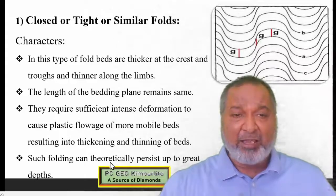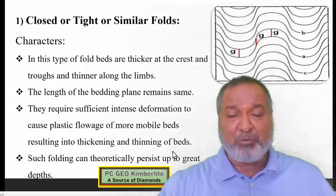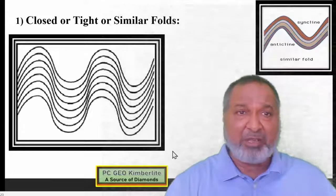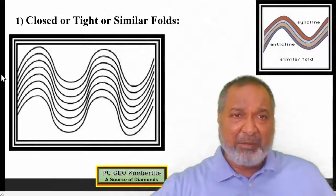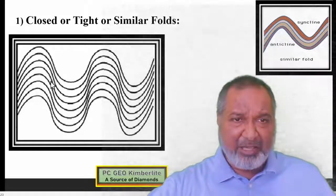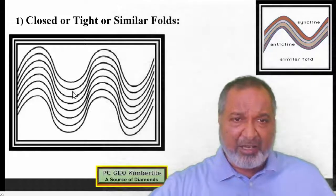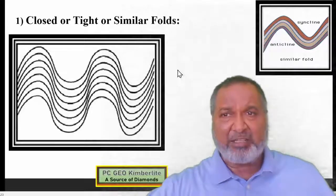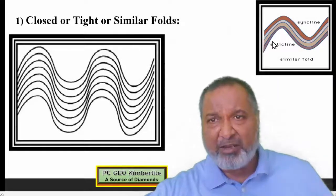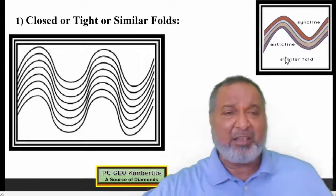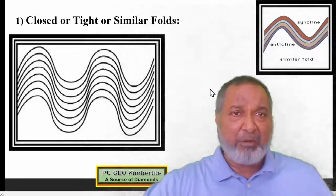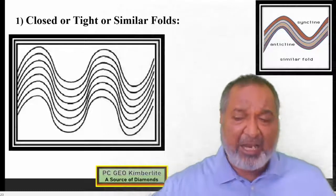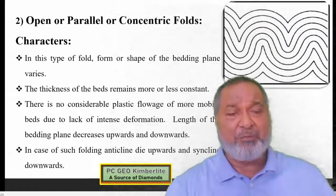You can clearly see the thinner limbs and thicker portions at the crust and trough portions. The limbs are very close and the crest and trough are the thicker ones. So this is what we have: close, tight or similar fold.